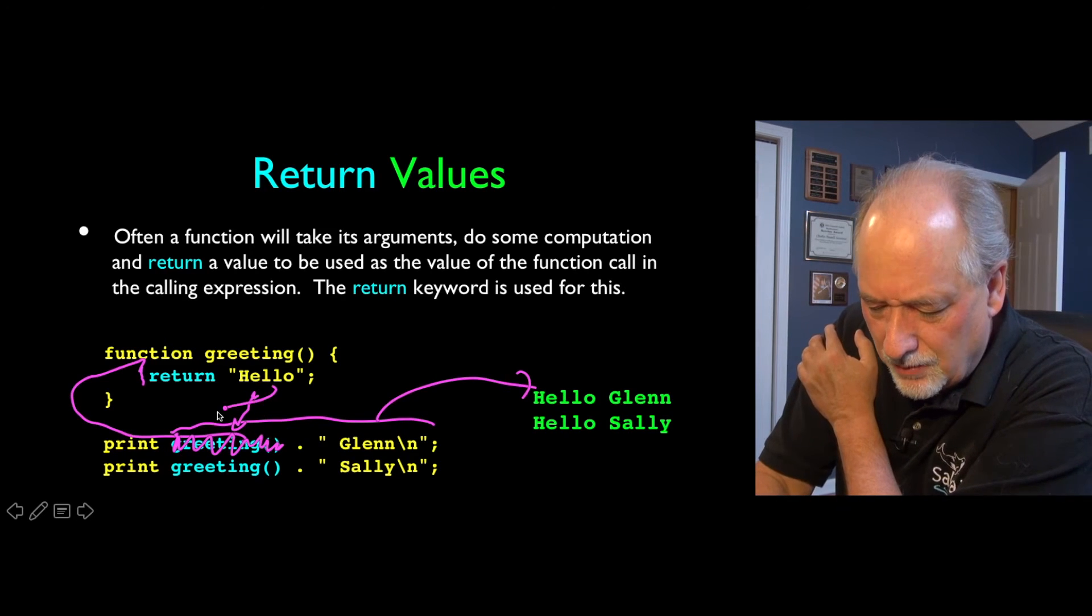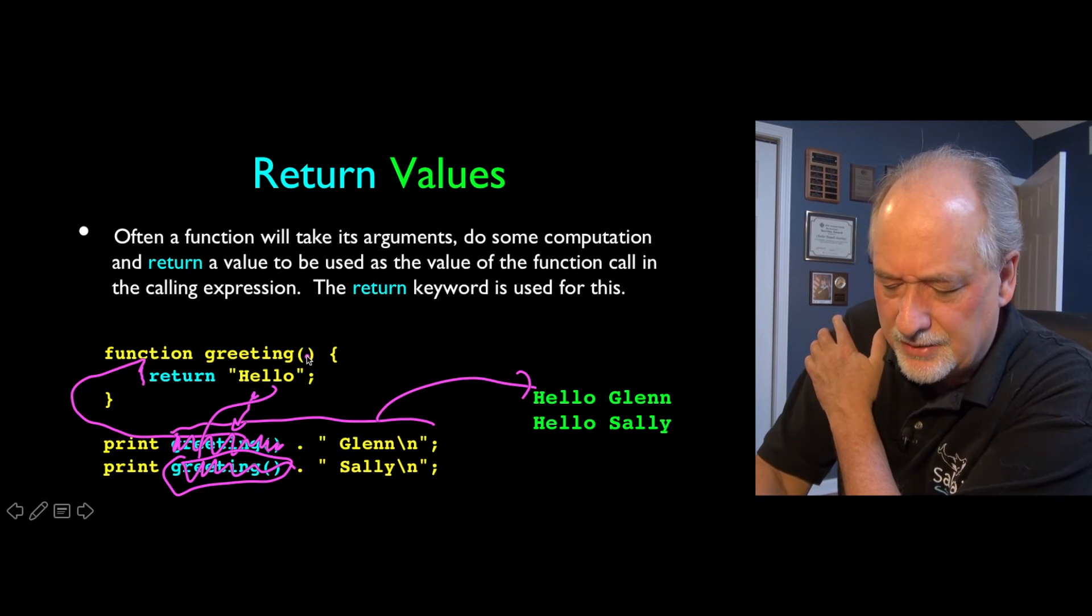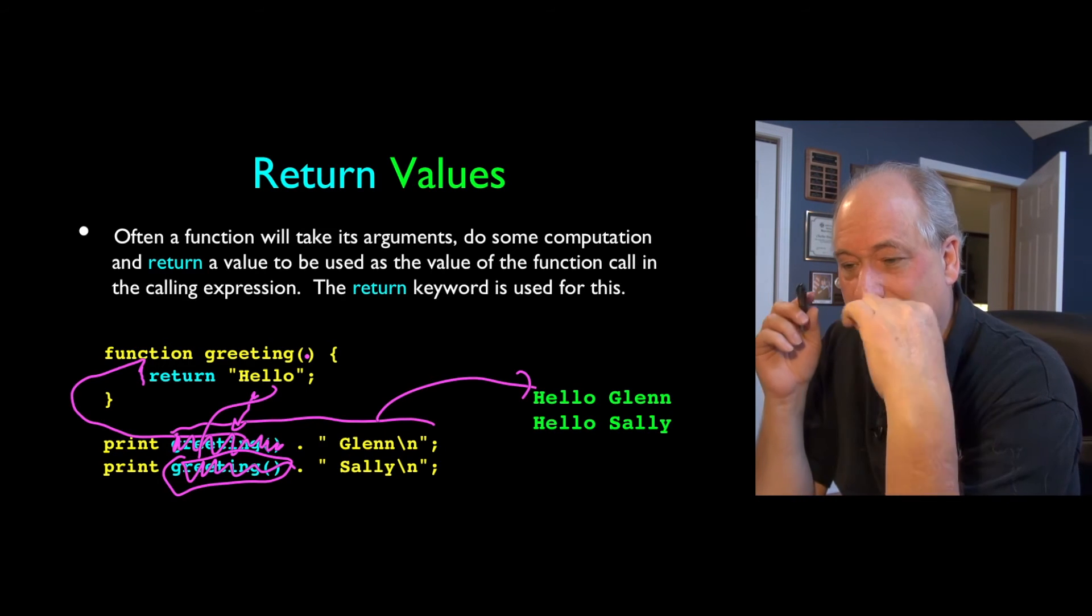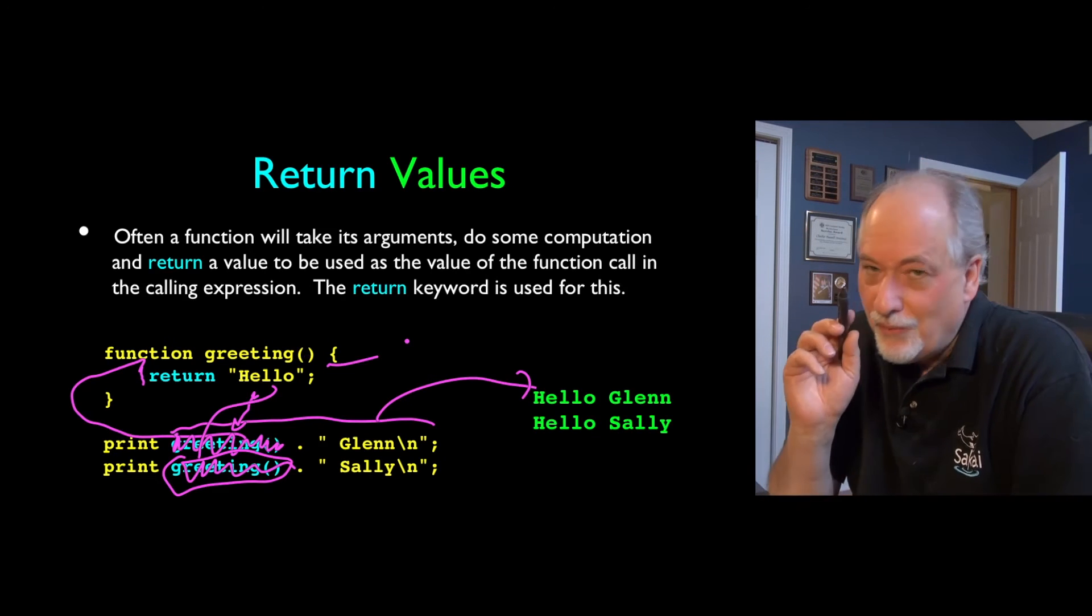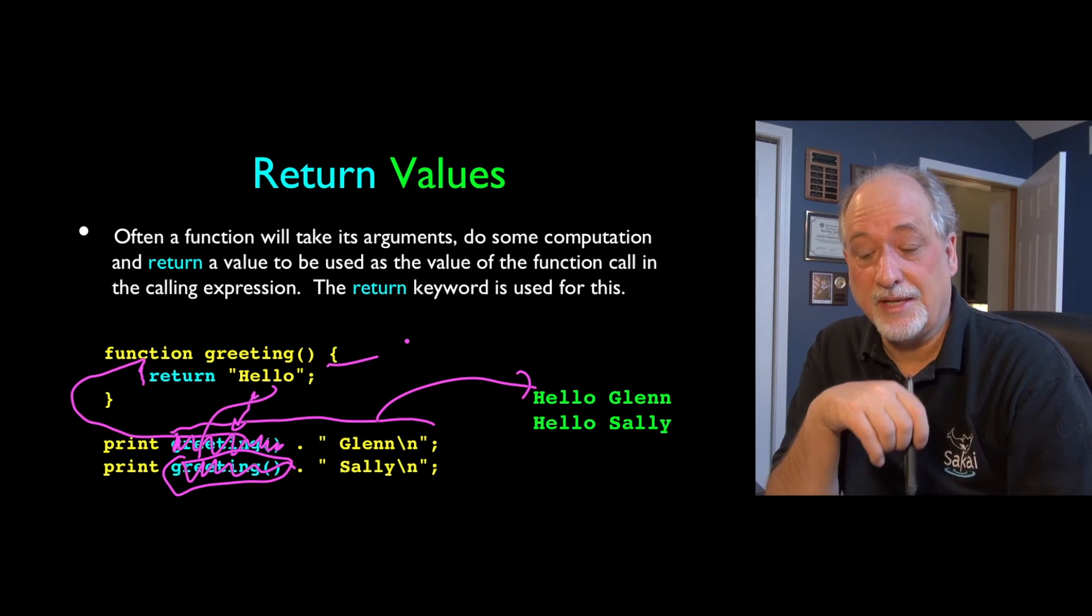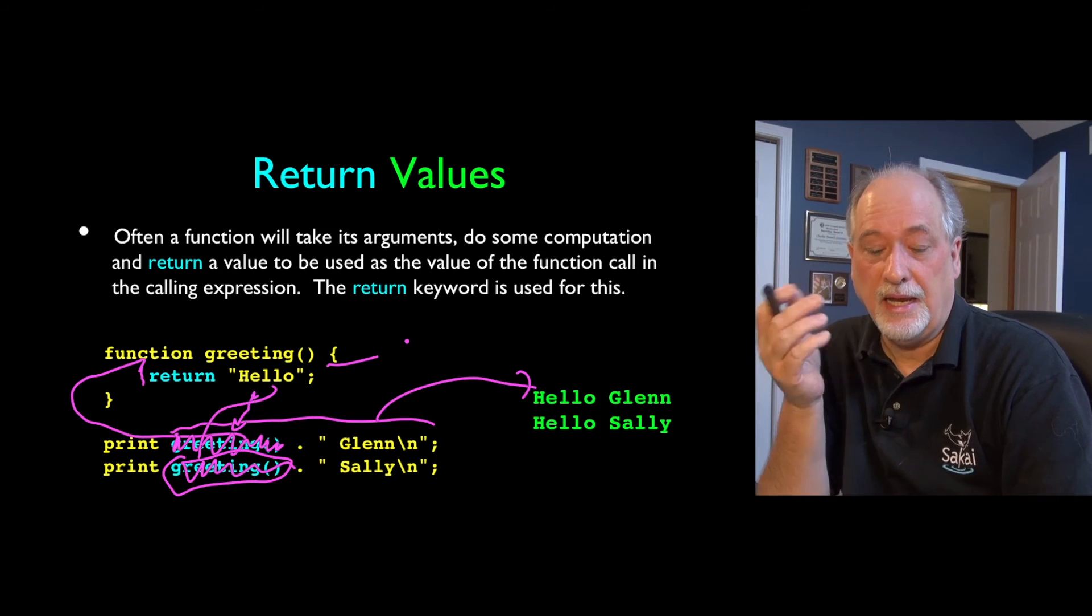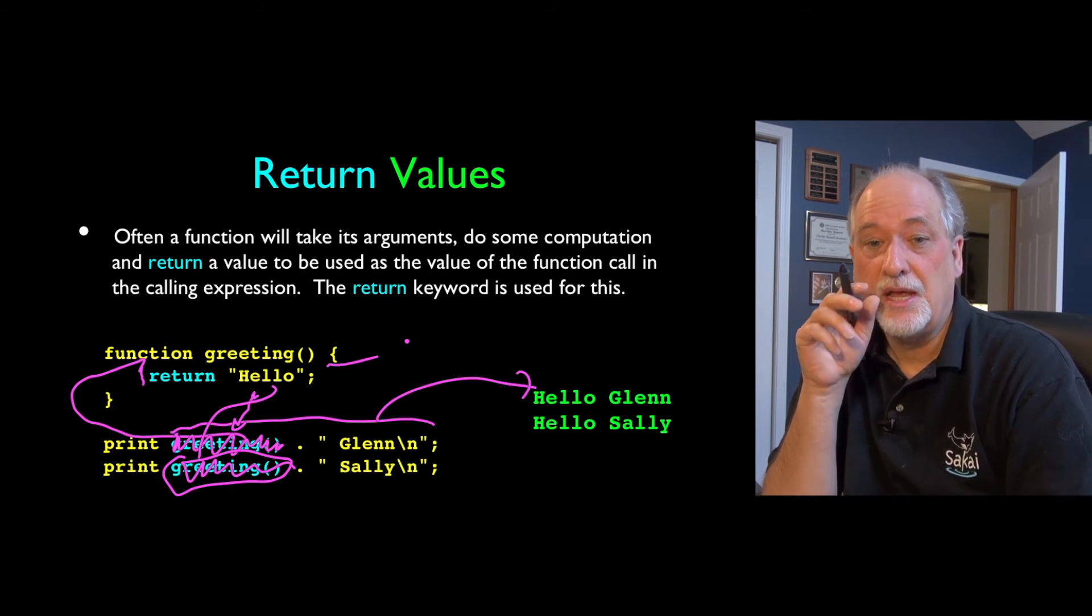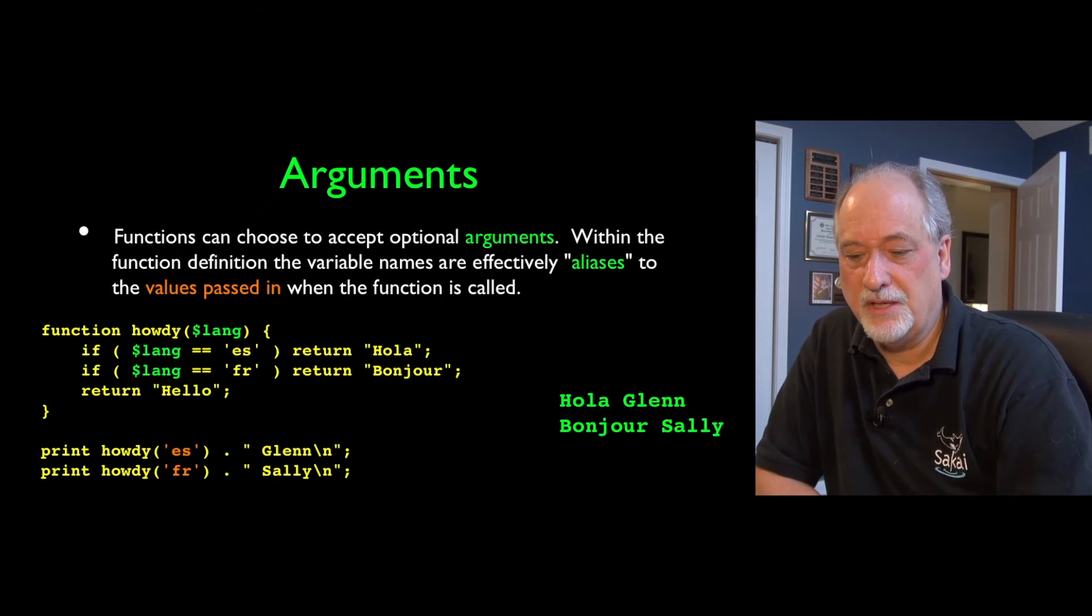and then out comes hello Glen. We do the same thing. The hello replaces the greeting, and then it becomes hello Sally. And so the return basically within an expression replaces the function call value with the return value. And you can, this is just one line, keep it small on a slide. The return statement is an executable statement. It doesn't have to be the last line. It can be anywhere within. And when it executes inside of a function, it both stops function execution and determines what the residual value in the original calling expression is going to be.